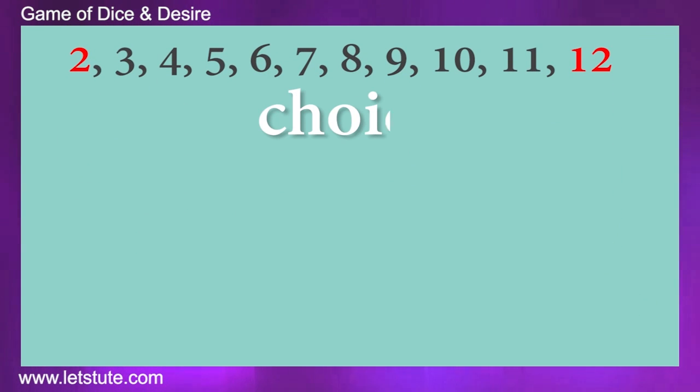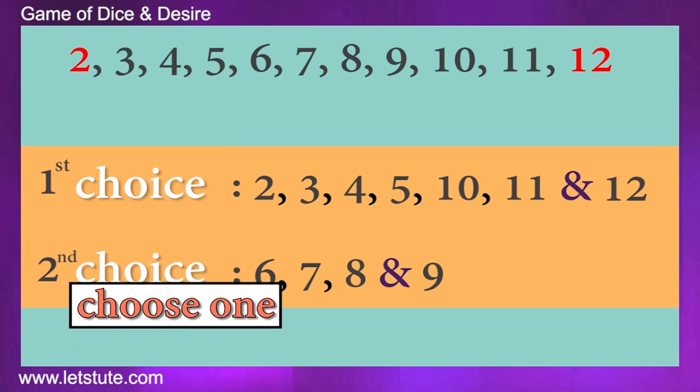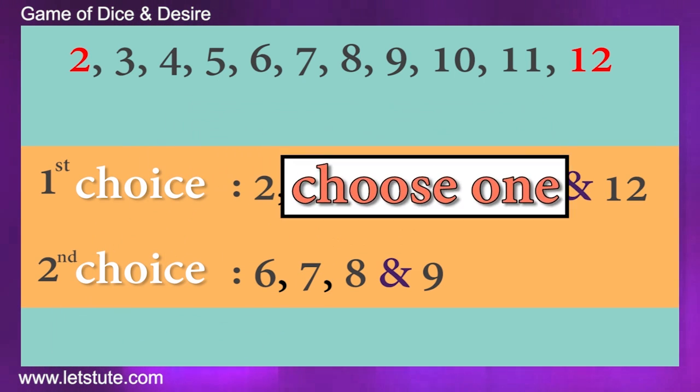Okay. And here are the choices. The set 1 has the following sums: 2, 3, 4, 5, 10, 11 and 12. And the set 2 has sums 6, 7, 8 and 9. And you have to choose one of the sets to play this game.